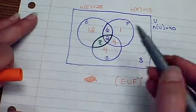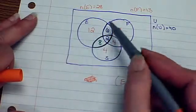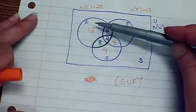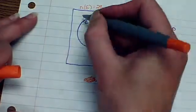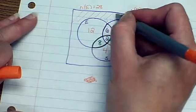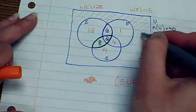So if we look at this, we don't want anything in their union. So let's think about where their union would be. Their union would be all of E and all of F, so we want everything on the outside of their union.